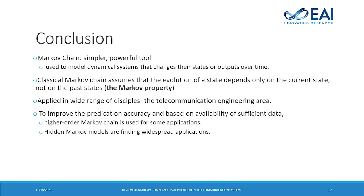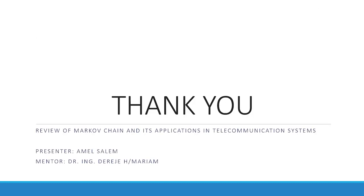Markov chain is a simple but powerful tool to model different systems. It assumes the future state depends only on the current state, making it memoryless with the Markov property. Markov chain is used to model, solve and predict different situations, and its accuracy is higher than other time series models. To increase accuracy further, higher-order Markov chain can be used. Currently, Hidden Markov models are widely used for different kinds of applications. Hopefully, this review provides good insight into the basic concepts of Markov chain and some telecommunication system applications as well. Thank you.